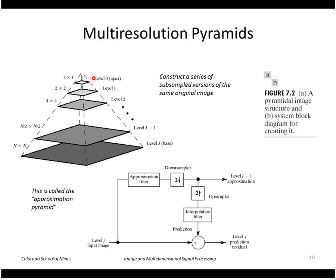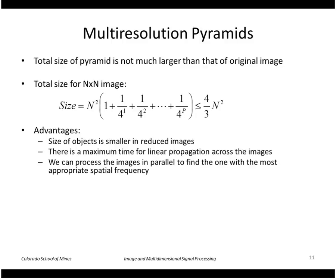So eventually it will get up to a single pixel sized image or one by one image at the very tip of the pyramid. So it's a pyramid of images. Each one is a progressively subsampled or approximated version of the original. And the total size of that pyramid is actually not much larger than the original image.